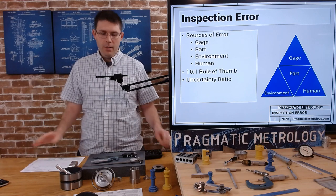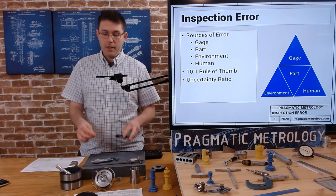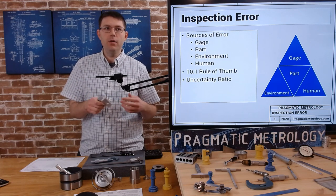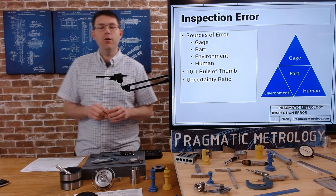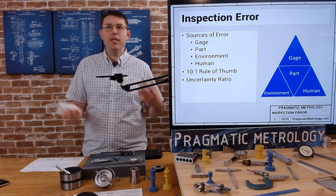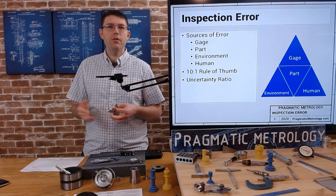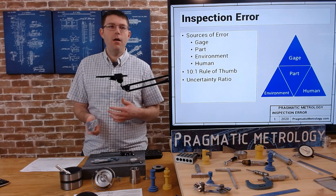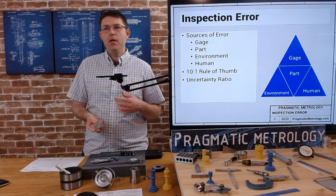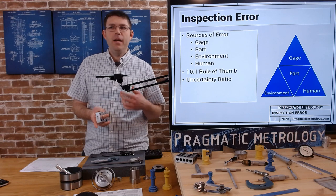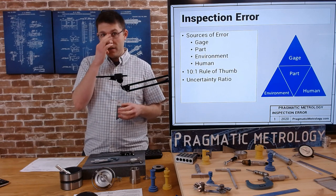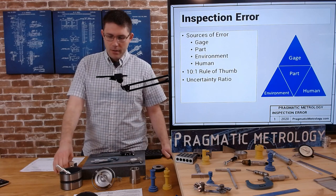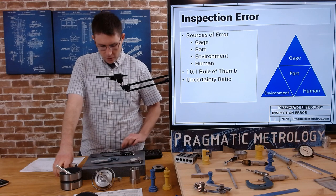We're going to look at this from many perspectives. There are sources of error that come from the gauges themselves, from the parts, environmental errors, and of course human errors. We'll also get into the 10 to 1 rule of thumb and the uncertainty ratio - two concepts that are closely related and have been around a long time and really help with decision-making.